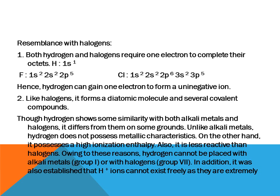Though hydrogen shows some similarity with both alkali metals and halogens, it differs from them on some grounds. Unlike alkali metals, hydrogen does not possess metallic character. On the other hand, it possesses a high ionization enthalpy. Also, it is less reactive than halogens. So due to these reasons, hydrogen cannot be placed with alkali metals, that is group 1, or group 7. In addition, it has also been shown that H⁺ ions cannot exist freely as they are extremely reactive.